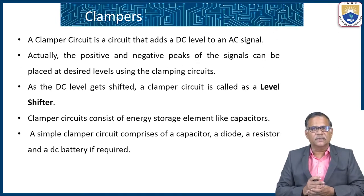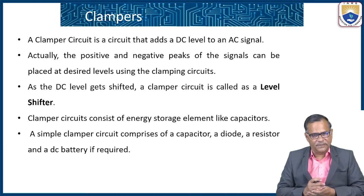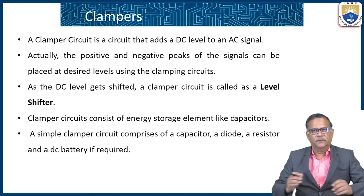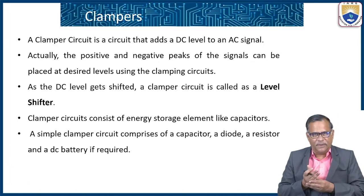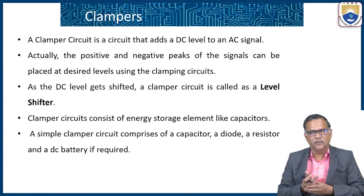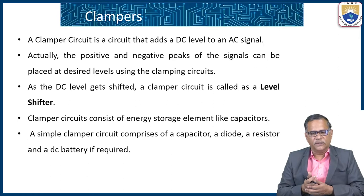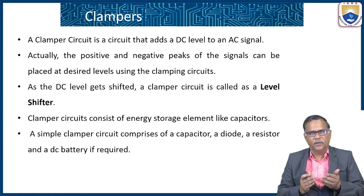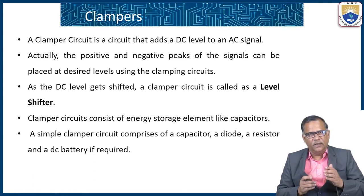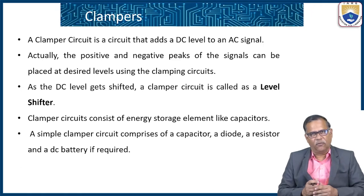The wave shape is kept as it is; only the DC level or average value is shifted. Clamping circuits essentially consist of energy storage elements like capacitors. A simple clamping circuit consists of a capacitor, a diode, and a resistor, and on the output side a DC battery and a voltage reference if required.